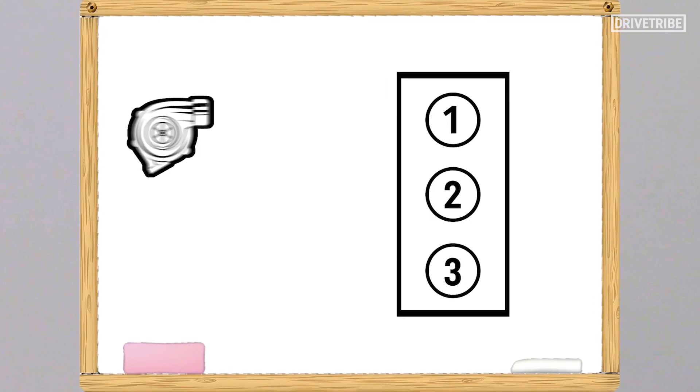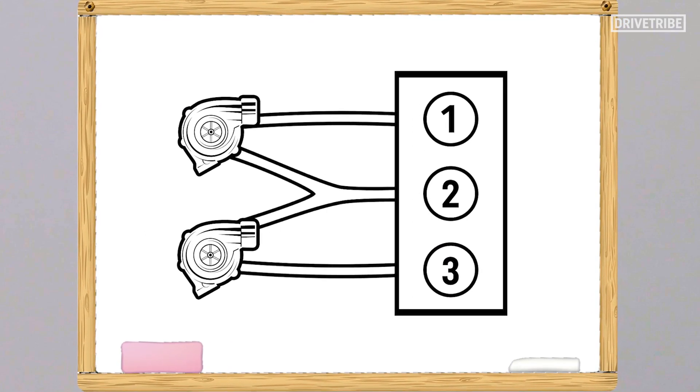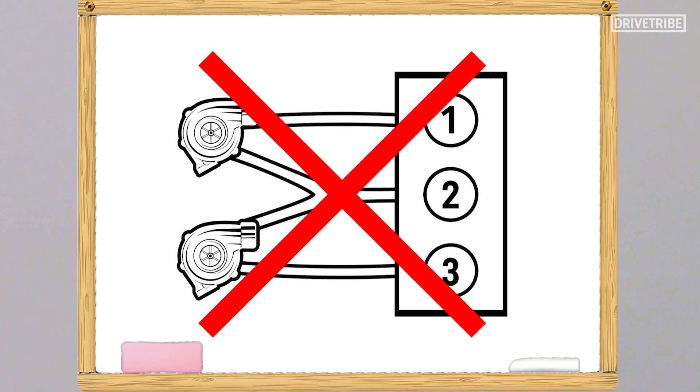Now I know what you're thinking, how do you spool up two turbos with three cylinders? It shouldn't really work, you can't cleanly divide three by two.